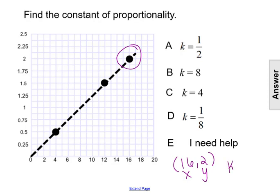So the constant of proportionality k is the ratio of y over x. So in this case, that would be 2 over 16, which can reduce to 1 over 8.